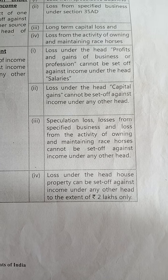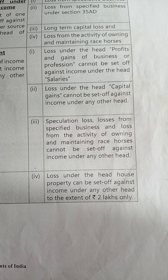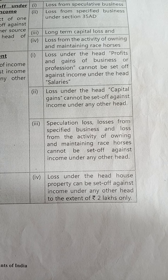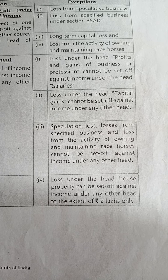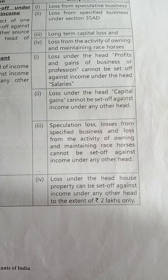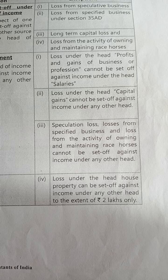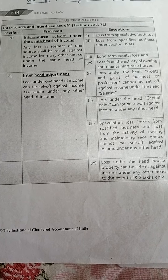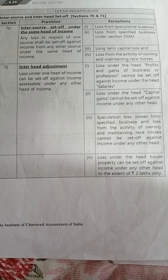Fourth exception: loss under the head house property can be set off against income under any other head, but only to the extent of two lakhs. If the loss exceeds two lakhs, the amount beyond two lakhs cannot be set off against any other head. These are the provisions to set off losses which arise during any previous year.